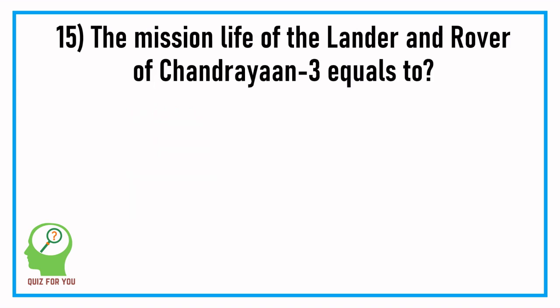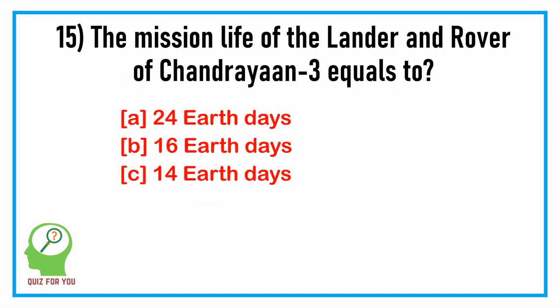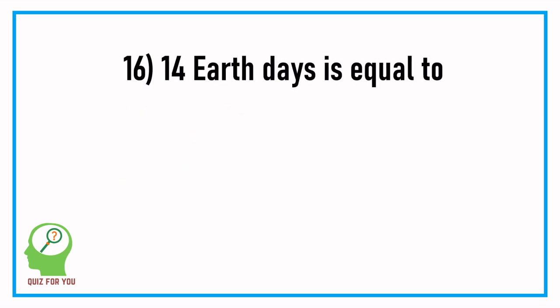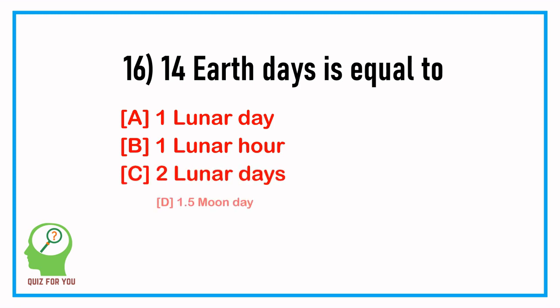Question number fifteen: the mission life of the lander and rover of Chandrayaan-3 equals how long? Answer: 14 earth days. Question number sixteen: 14 earth days is equal to? Answer: 1 lunar day.